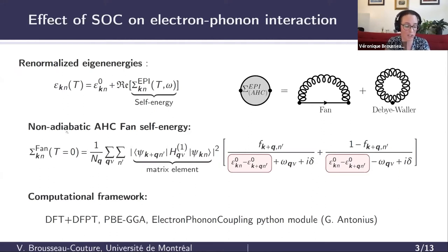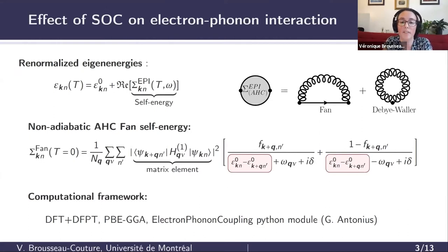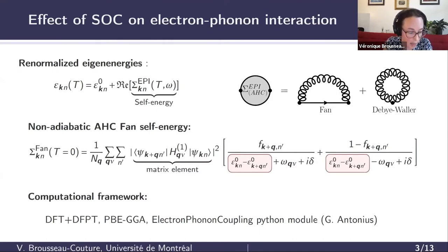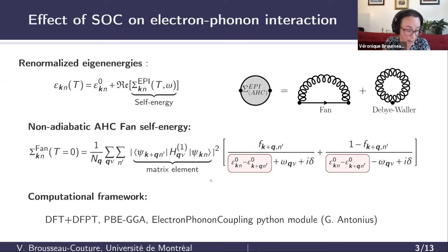If we quickly take a look at the explicit expression for the Fan self-energy, in the light of what we just discussed, we can think that even if in principle all the physical quantities entering this expression will naturally be affected by including spin-orbit interaction, we can still reasonably think that the leading effect on the ZPR might come from the change in the electronic energies in the denominators.